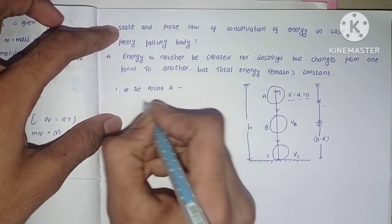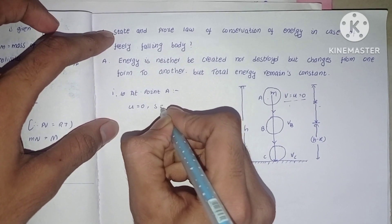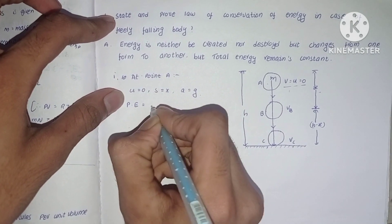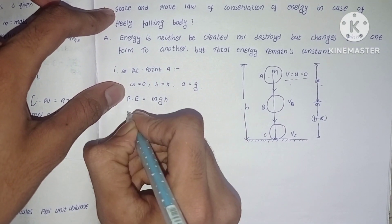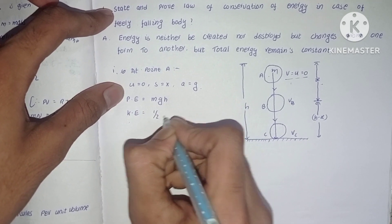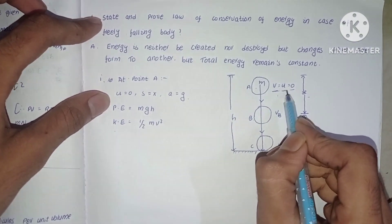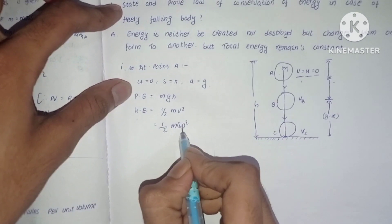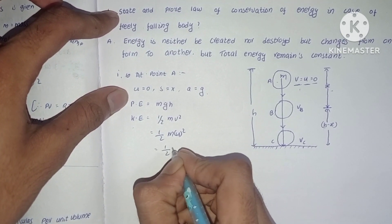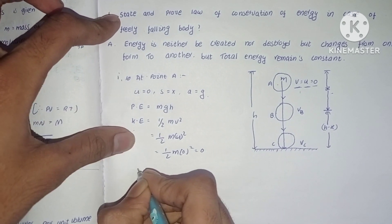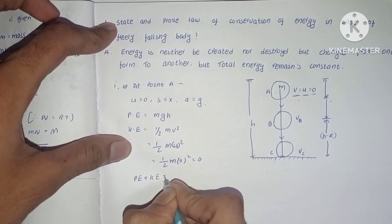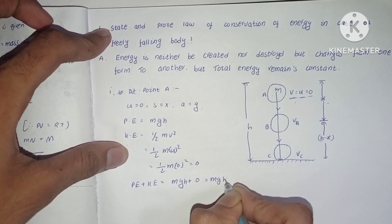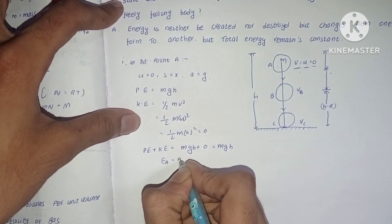Case one — at point A: u = 0, s = X, a = g. Potential energy PE = mgh. Kinetic energy KE = half m v squared, but since v = u = 0, KE = half m into 0 squared = 0. Therefore, total energy E_A = PE + KE = mgh + 0 = mgh.